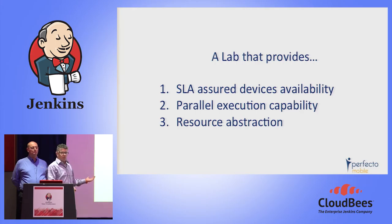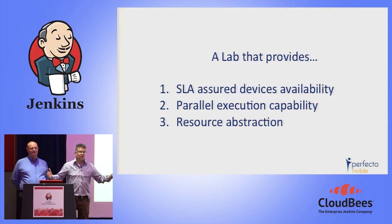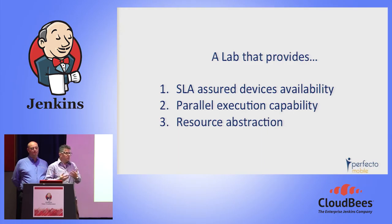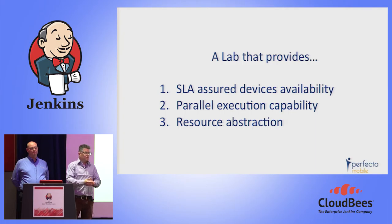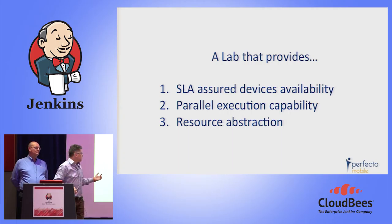Parallel execution is one of the most complicated things in mobile. Try to imagine running five different devices simultaneously — Android, Windows Phone, BlackBerry — from different operating systems and manufacturers, each with their own drivers. There are also test framework limitations: UFT has issues running parallel tests on devices, requiring ALM and other workarounds. Running tests in parallel is something you want from your lab. Resource abstraction is also important but won't be covered further here.